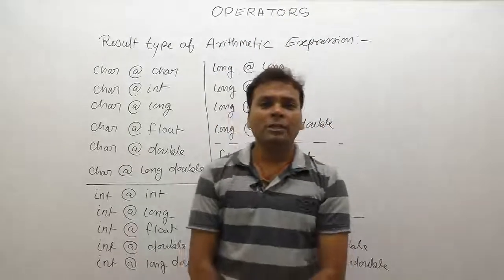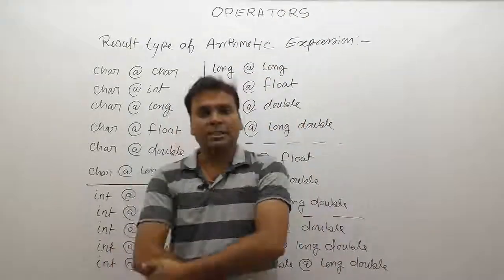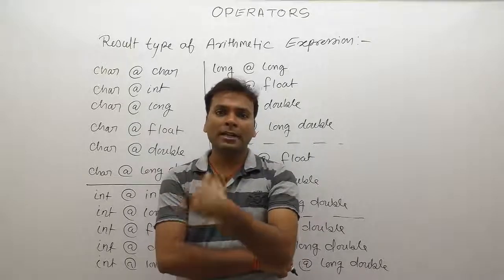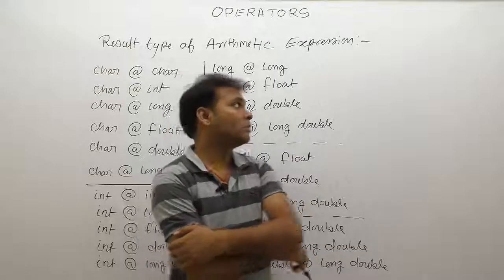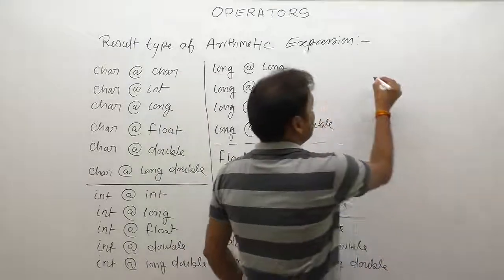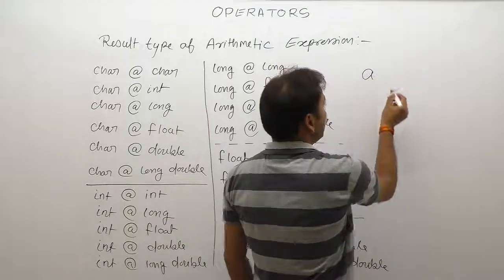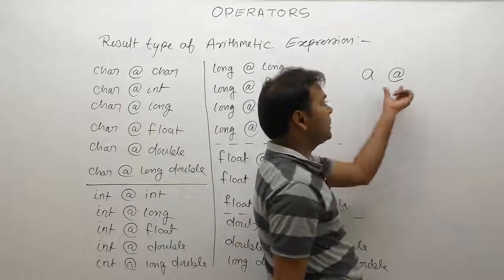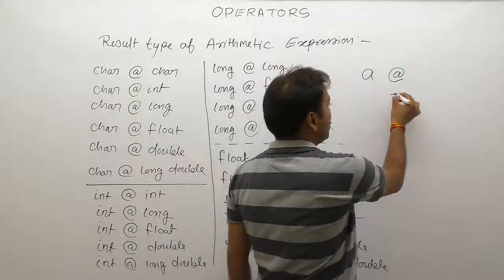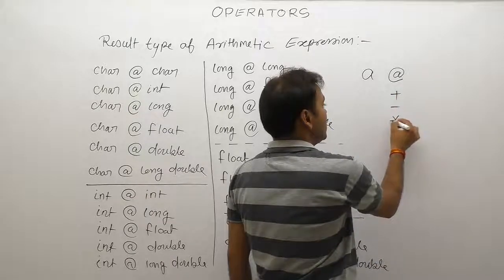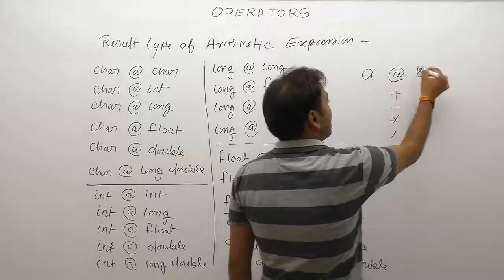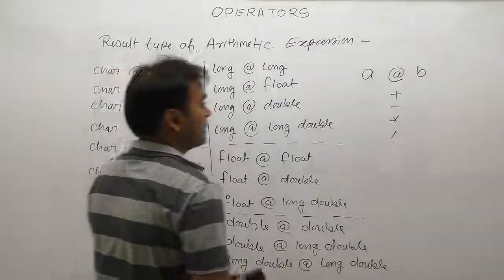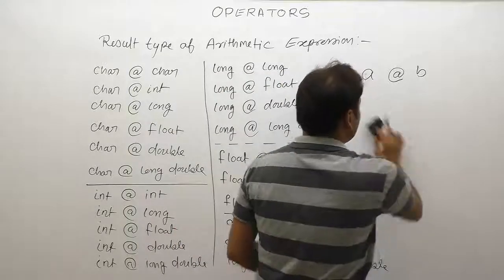Before solving any arithmetic expressions or arithmetic operations, we must have an idea about the result of arithmetic expressions. For example, if you have any arithmetic operator — maybe plus, minus, multiplication, division, and so on — we may have any type of operands.